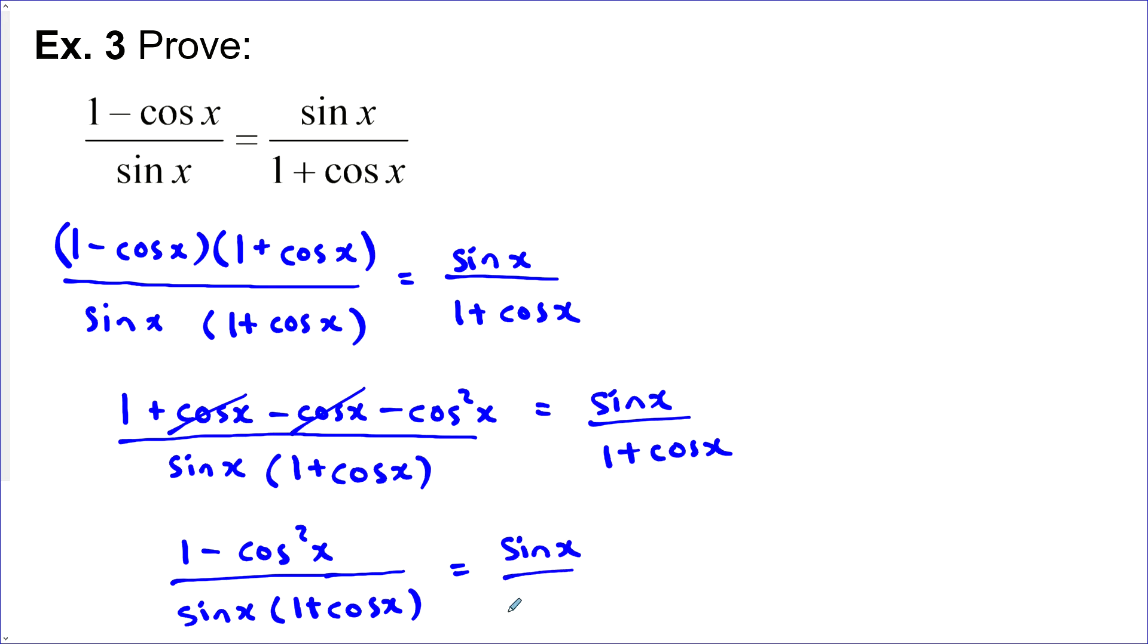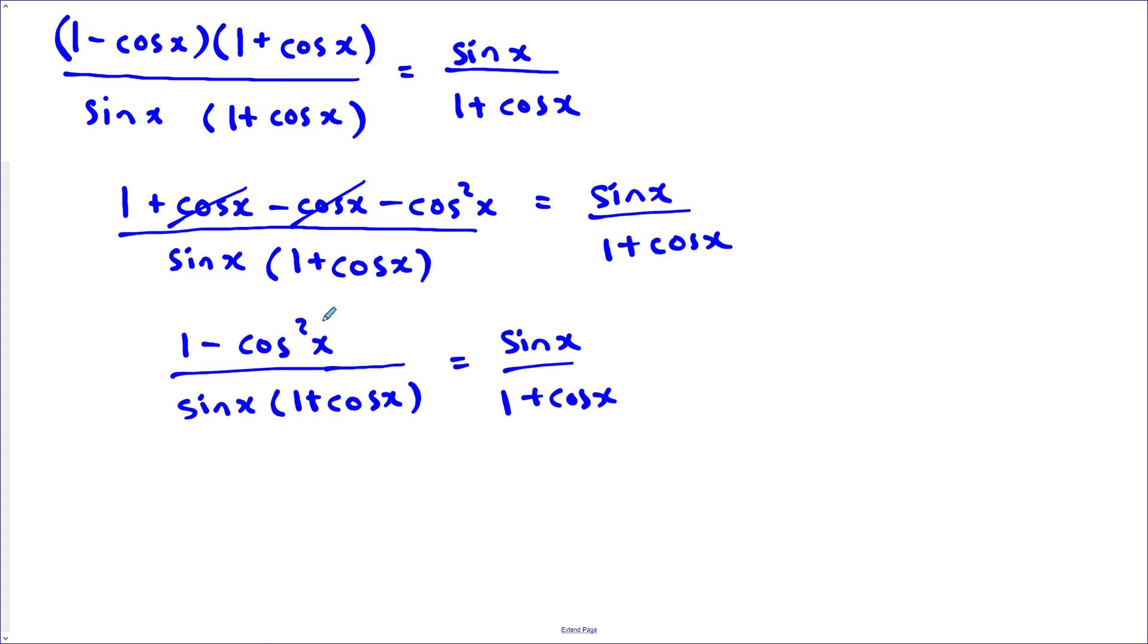On this side, sin x(1 + cos x). Now, this right here looks like my Pythagorean identity rearranged. So I'm going to replace that with sin²x. Remember, our Pythagorean identity was cos²x + sin²x = 1. I rearranged it, so minus cos²x on both sides. This is what I'm using here to replace this numerator.